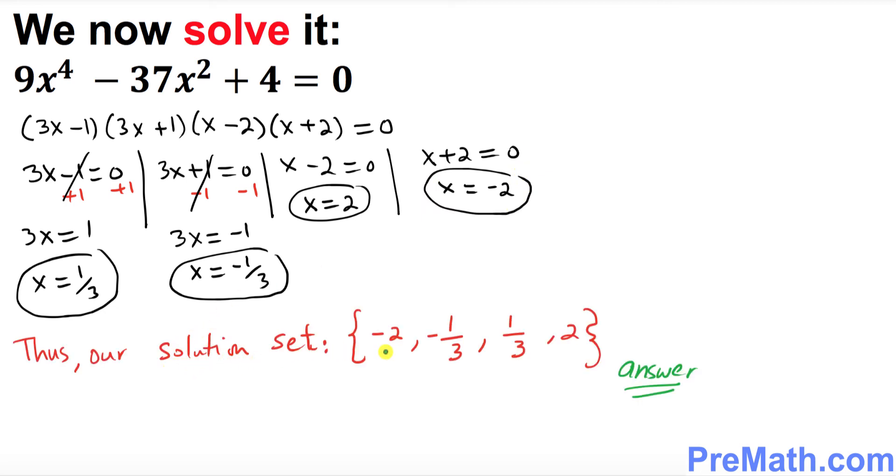So thus this is our solution set: negative 2, negative 1 third, 1 third, and 2. So that is our solution set.